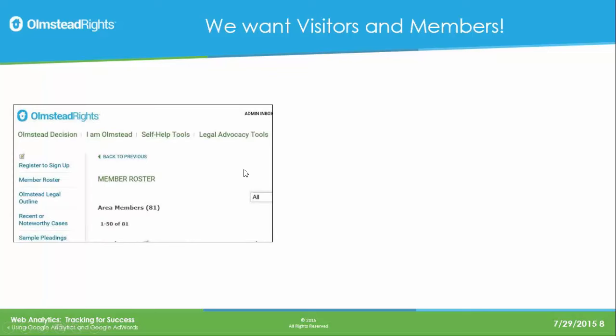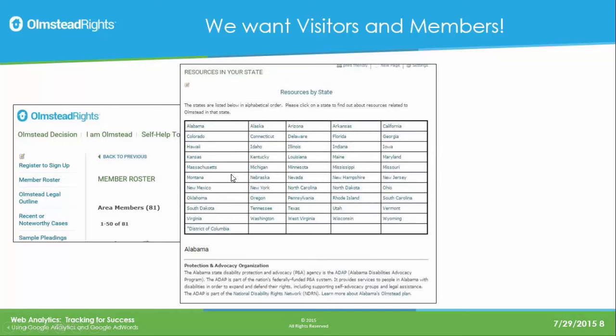There are certain parts of our website we especially want people to visit. We have a membership part for the legal tools, and we wanted to bring legal services advocates and protection and advocacy organizations to join our website, see the legal outline, and use the various pleadings. We want to know what we're doing right to draw people to join. We've also linked all the Olmstead resources in all 50 states, and we want people to come and use all the resources we've spent so much time putting onto the website.